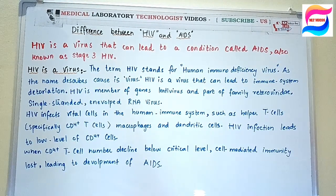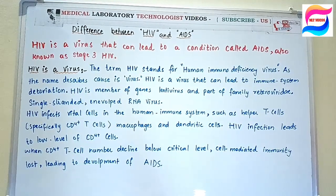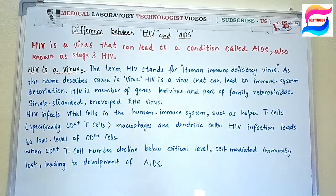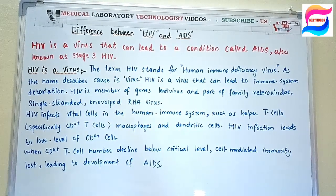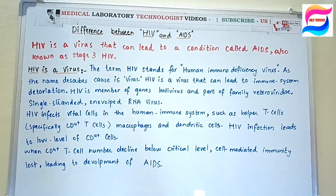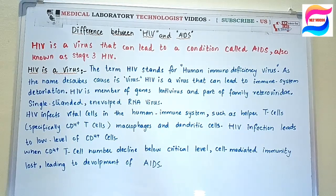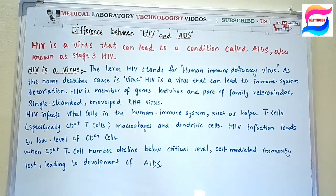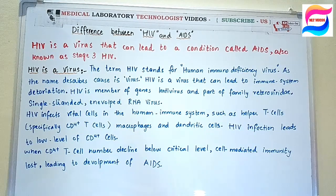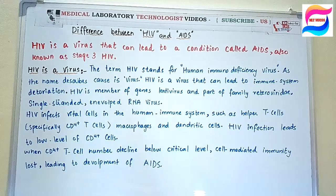HIV is a virus that can lead to a condition called AIDS, also known as stage 3 HIV. If a patient is infected with HIV, it does not mean that they are already in the condition of AIDS. It will take time to reach stage 3 HIV.